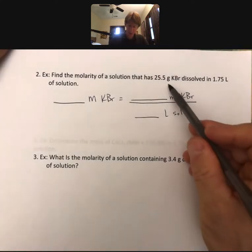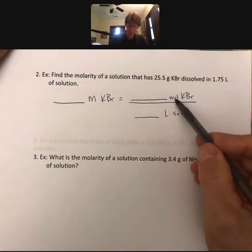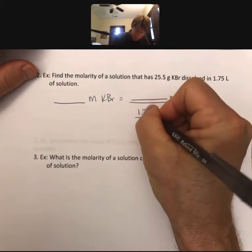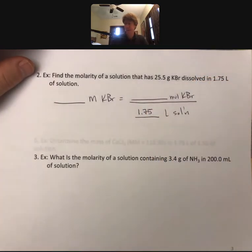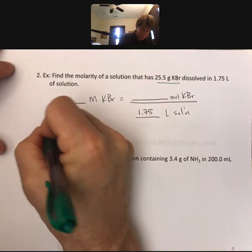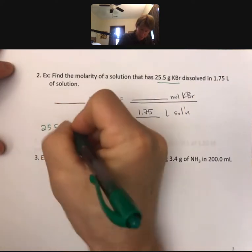I can see that I've got grams of potassium bromide, which I know how to turn into moles. And I've got liters of solution, so my liters of solution can just go straight in there. And then for turning my grams into moles, something we've done many times before.